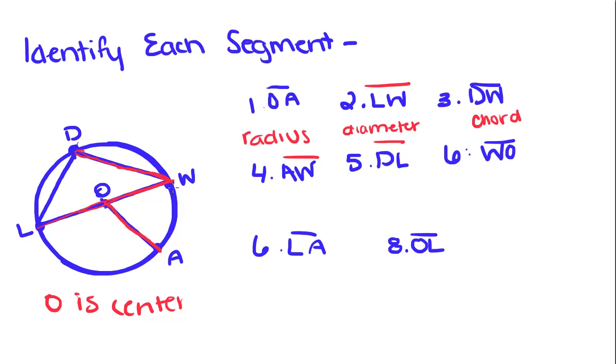AW, that wasn't drawn in, but it would be this segment right here. AW is another chord because it joins two points together but does not go through the diameter.